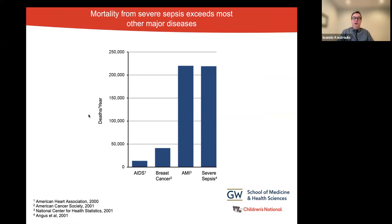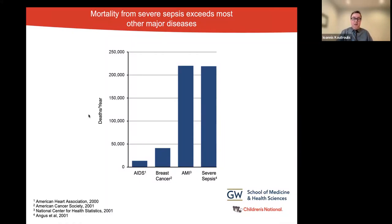Why are we so concerned about acute infections and sepsis? Unfortunately, mortality from severe sepsis remains very high and exceeds most other major diseases. The number of deaths from severe sepsis and septic shock is similar to that from heart attacks. Mortality is unacceptably high for both the adult and the pediatric population. Chronic underlying conditions, genetic predisposition, and environmental factors have been implicated in the development of sepsis, and despite scientific community efforts over several years, we haven't been able to significantly decrease mortality.